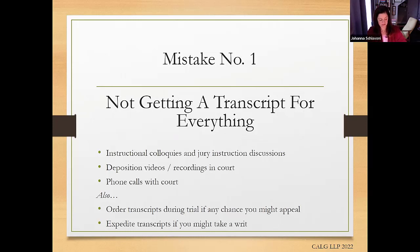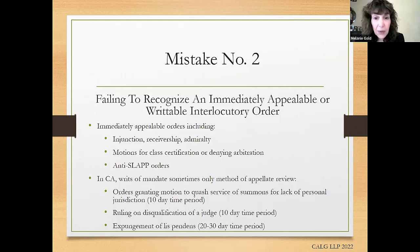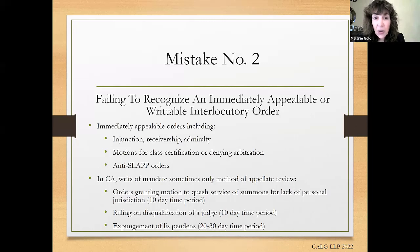Mistake number two is another common problem that can have really harsh consequences: the failure to recognize an immediately appealable or writable interlocutory order. Generally, the one final judgment rule means that only one final judgment in the case is appealable. However, by statute, certain interlocutory orders are made appealable. If such an order is appealable, you have to file a timely appeal or forever lose the opportunity to challenge it in the appellate court. The timing rules are the same as for filing an appeal from a final judgment.